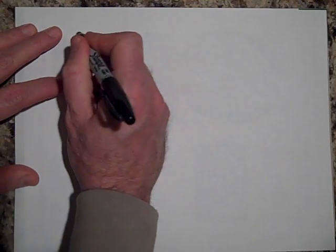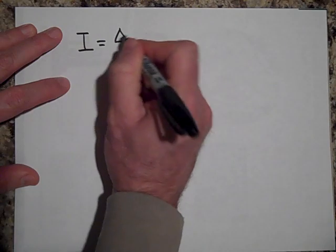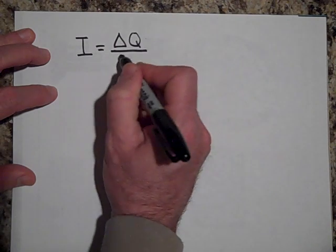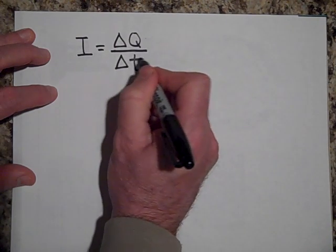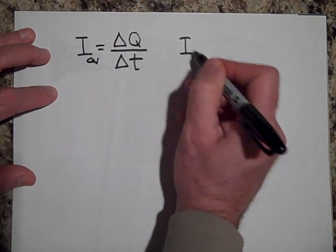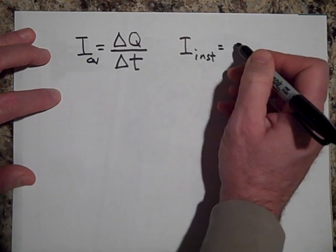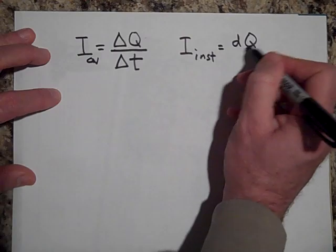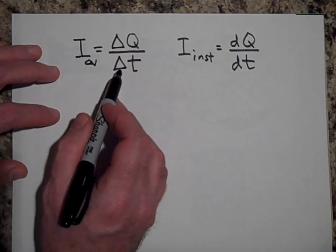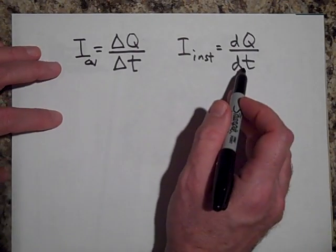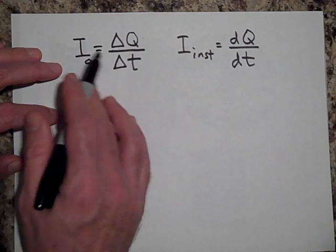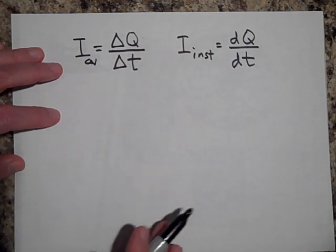So here are the equations that we got out of the last video. Current, which is I, is the amount of charge that passes through a cross-sectional area of wire in a given time. So that's average current. And then you have instantaneous current, which is the derivative of Q with respect to time. Kind of like how average velocity is delta X over delta T and instantaneous velocity is DX over DT. One is the average with a delta and the instantaneous is an actual derivative.